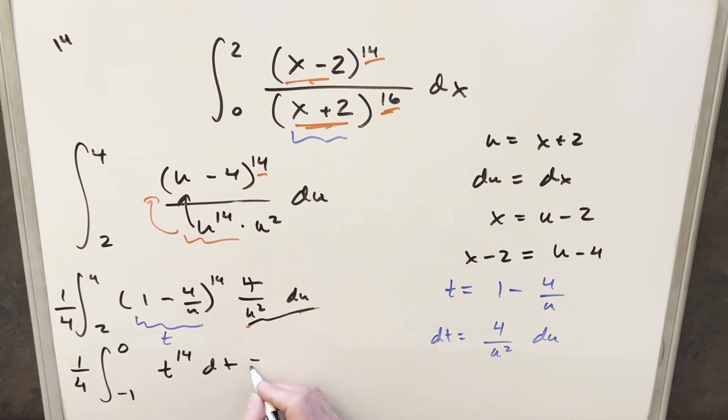So then this here is just power rules, so we can just go ahead and integrate this thing. So we'll have 1/4 in front. This is going to become t to the 15th, all over 15. And then we're just evaluating this from minus 1 to 0.